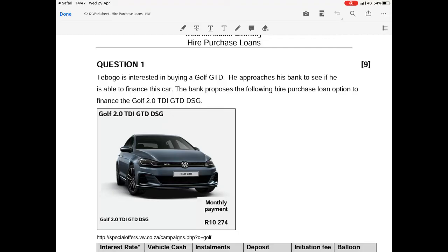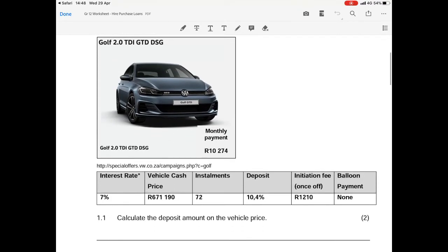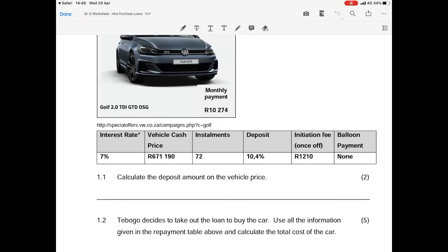Question one is about Tabogu who wants to buy a Golf. He approaches his bank to see if he's able to finance the car. The bank proposes the following hire purchase loan option to finance the Golf and there is a monthly payment of R10,274.